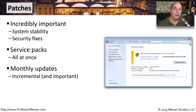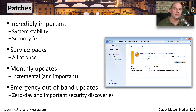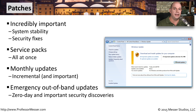Occasionally there will be a problem that occurs that affects everybody and needs to be patched immediately. So you may see emergency patches, or what they call out-of-band updates, because they don't come during the normal update cycles. These will have zero-day patches and vulnerabilities that have been discovered that somebody is now taking advantage of and that need to be patched as soon as possible.